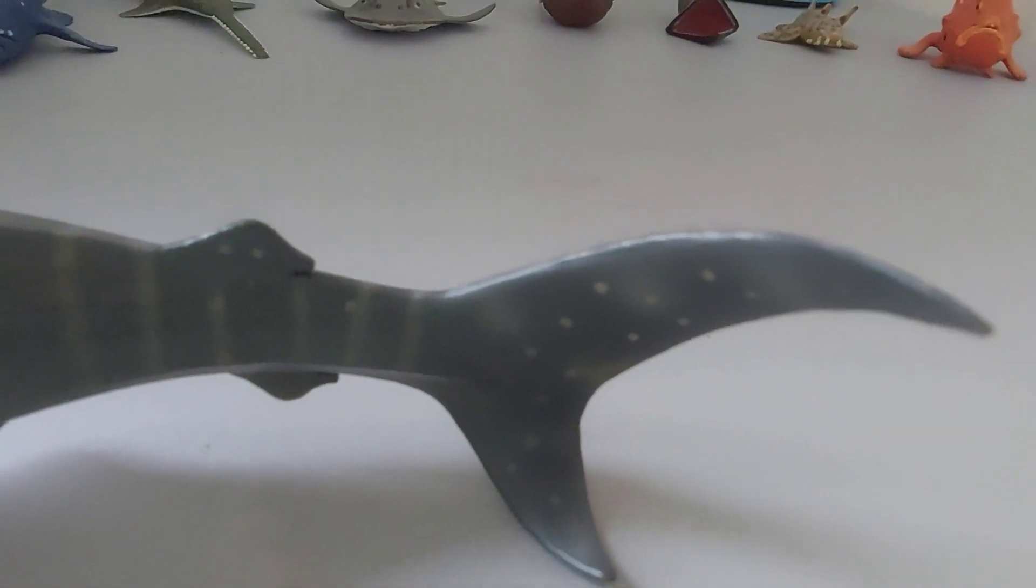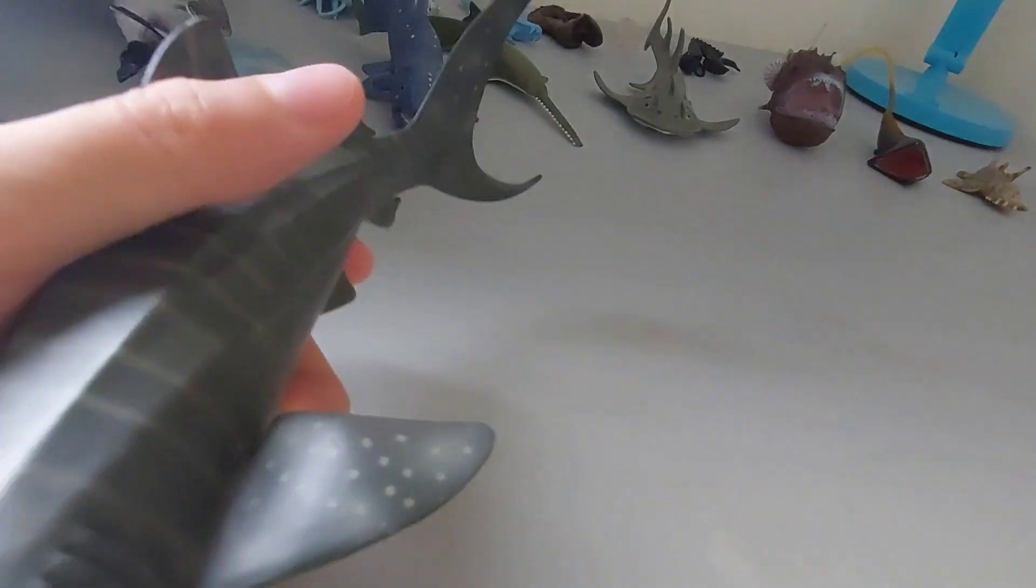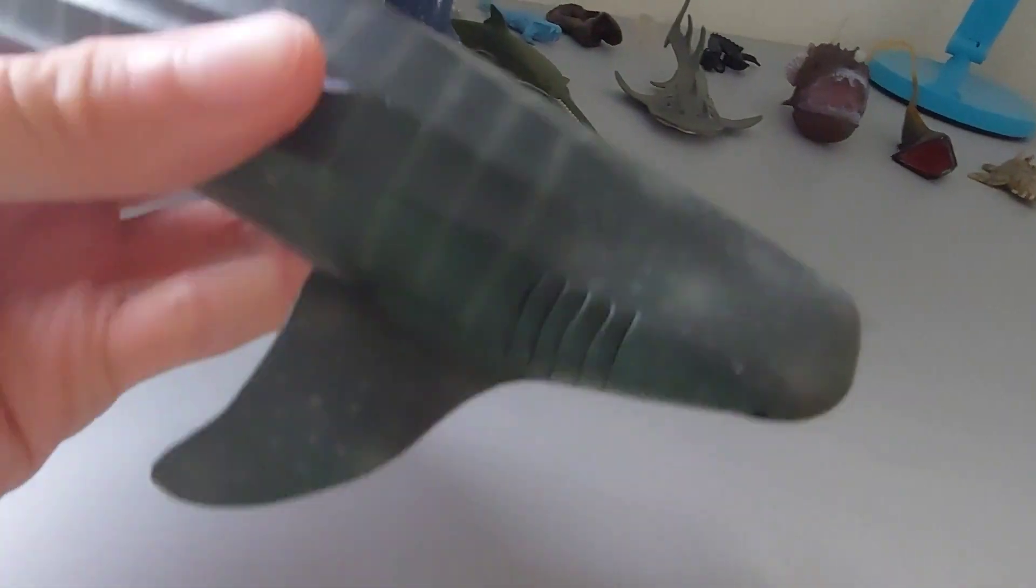The tail is warped and bended, which I don't like about this whale shark. But everything looks fine. They also came with the tag, which is pretty weird.